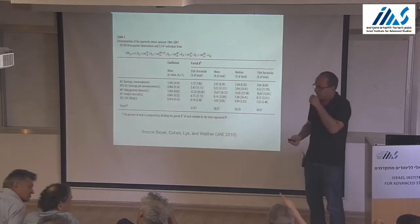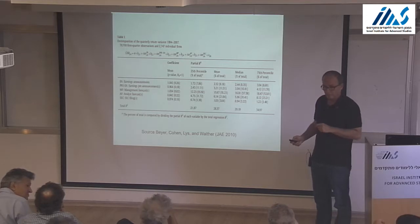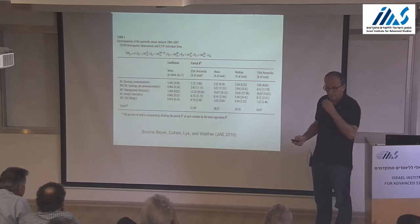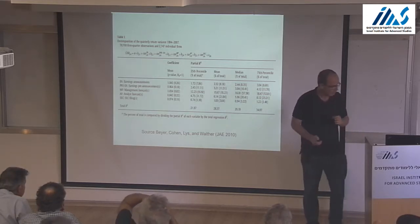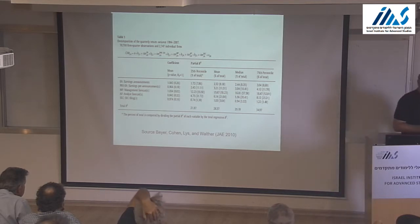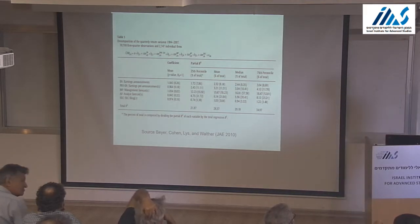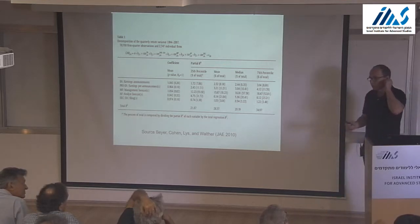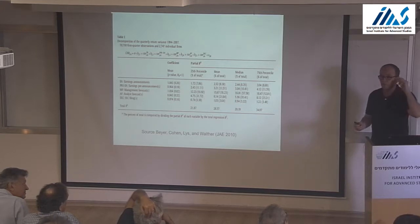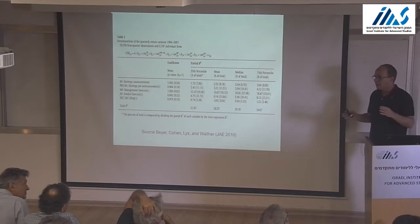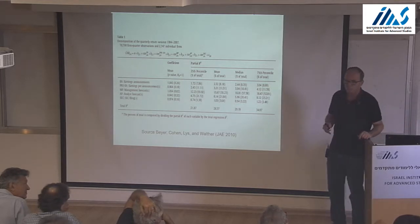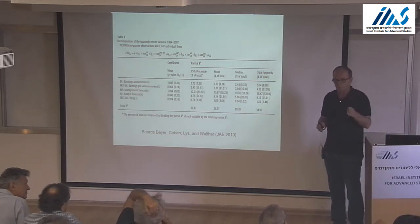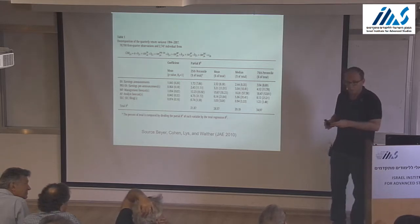Management forecasts are discretionary. But if a firm chooses to provide management forecasts, is it committing itself? No. There was actually a famous case — Burlington Coat — that was issuing management forecasts for a couple of quarters and stopped issuing them in a specific quarter. Surprise, surprise — that was a bad quarter. The following couple of quarters were pretty bad.